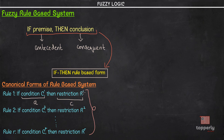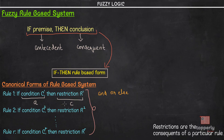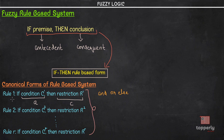Coming to what a restriction is: restrictions are generally modeled by fuzzy sets and relations. These restriction statements are generally connected by linguistic connectives like AND, OR, and ELSE. The restrictions R1, R2 up to RR apply to the output actions or consequences of a particular rule — that is, the restrictions are also the consequence in the rule-based form. We may have a number of conditions for a particular rule, and they are generally connected by either disjunction or conjunction. Hence we can have multiple conjunctive antecedents or multiple disjunctive antecedents for a particular rule.